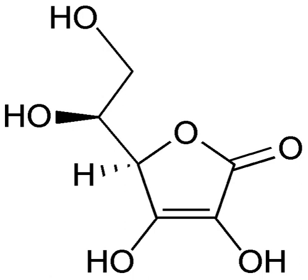Each half-reaction has a standard electrode potential, which is equal to the potential difference or voltage at equilibrium under standard conditions of an electrochemical cell in which the cathode reaction is the half-reaction considered, and the anode is a standard hydrogen electrode where hydrogen is oxidized. The electrode potential of each half-reaction is also known as its reduction potential E°red, or potential when the half-reaction takes place at a cathode.